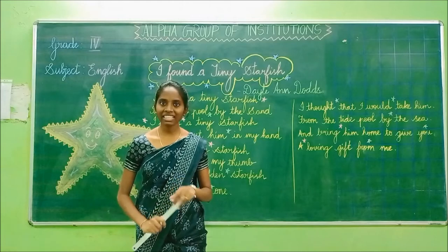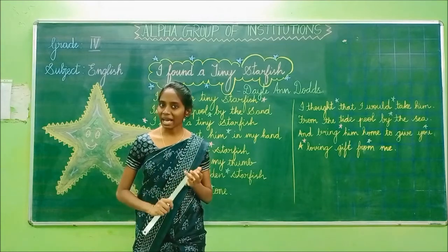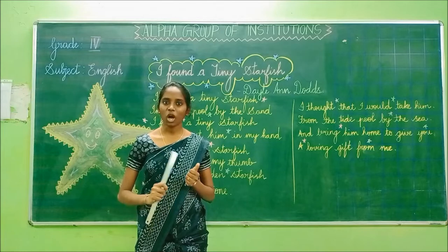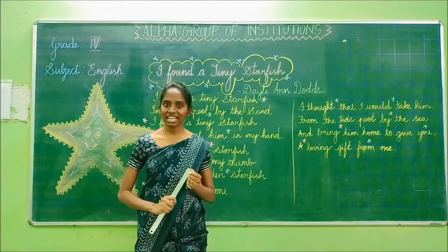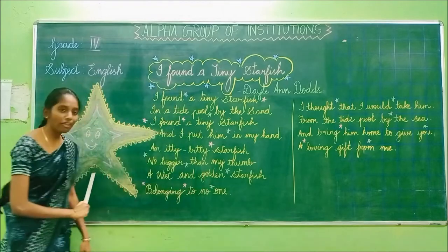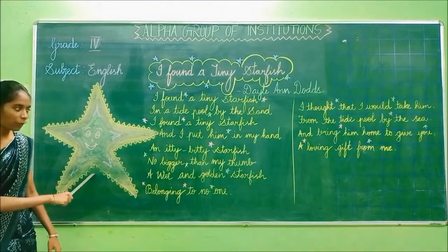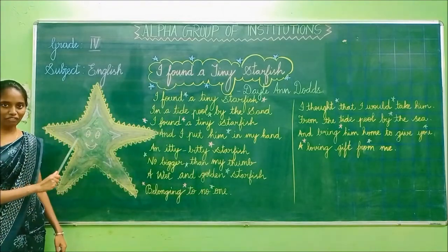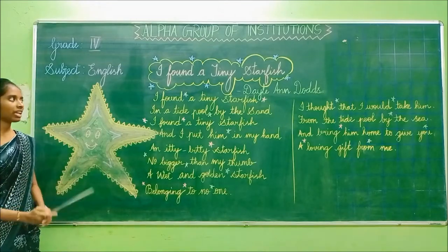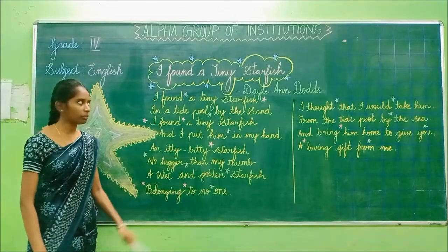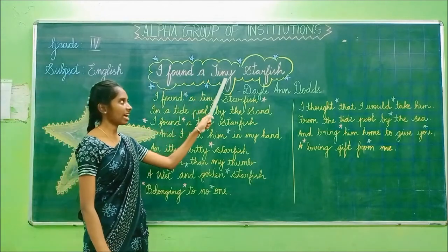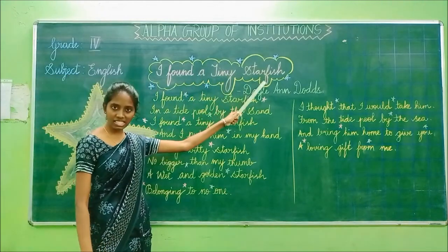I am going to repeat again: crabs, starfish, jellyfish, octopus, sea ice, etc. Now we are going to see starfish in this poem. This is a starfish — see, it looks like a star. And the title of the poem is: I found a tiny starfish.